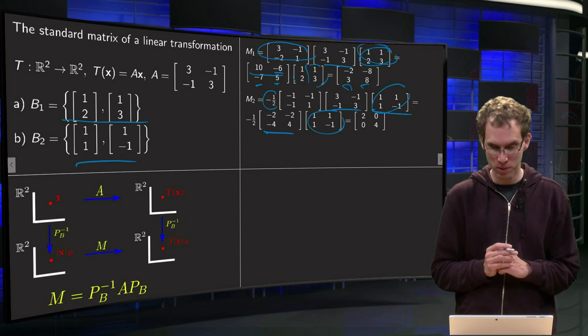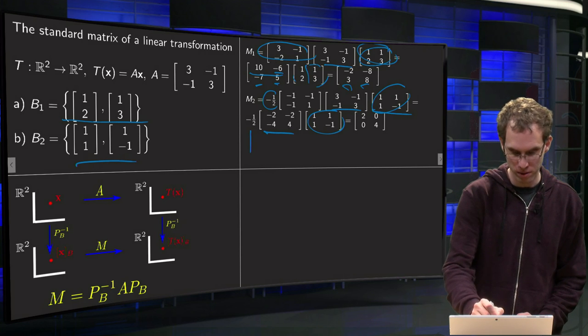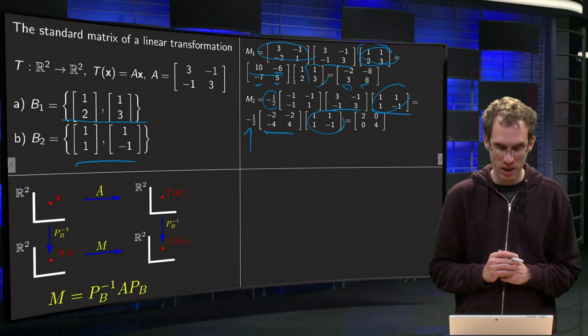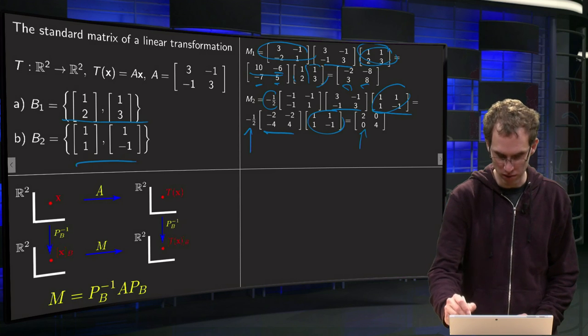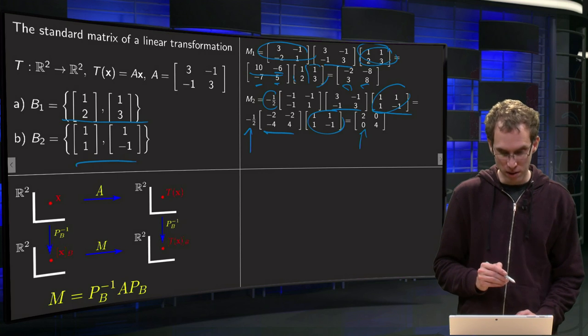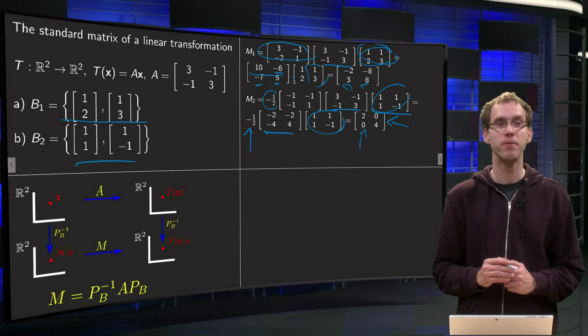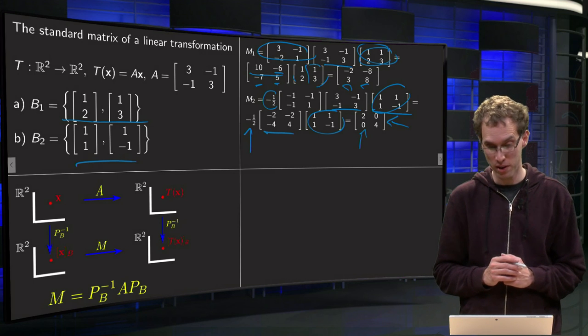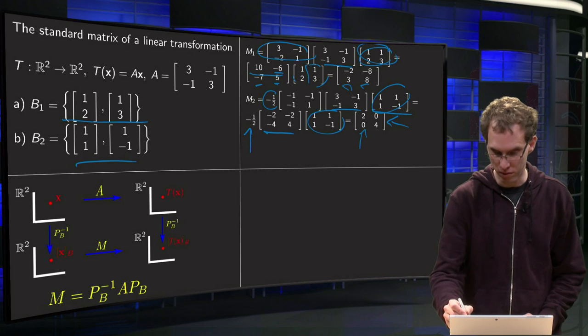And then we continue: minus 2 minus 2 equals minus 4, with the additional minus 1 half equals 2, and then minus 4 plus 4 equals 0. And that's nice, we get a 0 over there. And then we continue with minus 2 plus 2, we get an additional 0 over there. That's nice. And the last one, minus 4 minus 4 equals minus 8 times minus 1 half equals 4.